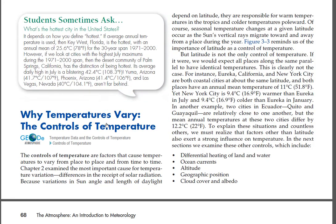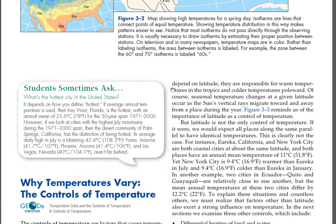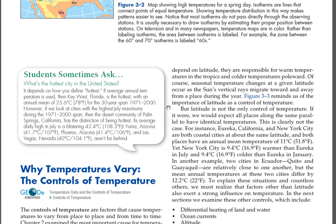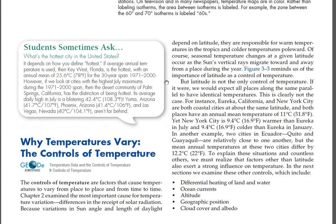Why do temperatures vary? The controls of temperature are factors that cause temperatures to vary from place to place and from time to time. Chapter 2 examined the most important cause for temperature variation — differences in the receipt of solar radiation. Because variations in sun angle and length of daylight depend on latitude, they are responsible for warm temperatures in the tropics and colder temperatures poleward. Seasonal temperature changes at a given latitude occur as the sun's vertical rays migrate toward and away from a place during the year. Figure 3-3 reminds us of the importance of latitude as a control of temperature.